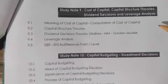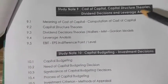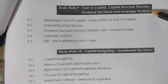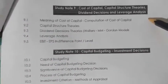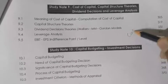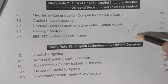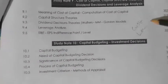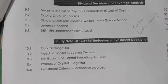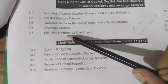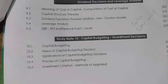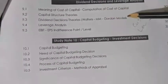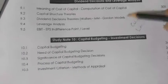In Financial Management, the ninth chapter covers Cost of Capital, Capital Structure Theory, Dividend Decisions, and Leverage Analysis. Cost of Capital and Leverage Analysis are the most important topics here. EBIT, EPS, and Indifference Point Level are important for 3 marks. Walter, M.M., and Gordon Models are theory questions also covered for 3 marks.